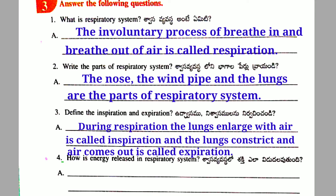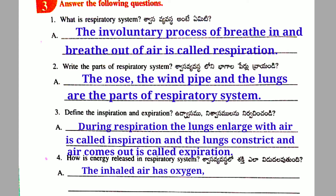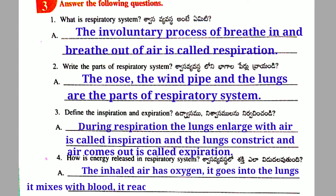Fourth question: How is energy released in the respiratory system? Answer: The inhaled air has oxygen. It goes into the lungs, mixes with blood, reaches the cells, and releases energy.